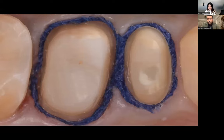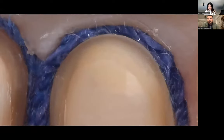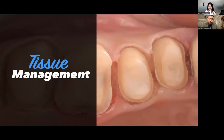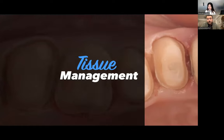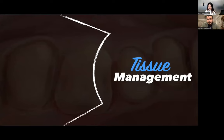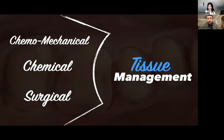For me, tissue management has three main methods and I can customize each method for every single scenario. I can use either a chemo-mechanical method like retraction cord, a chemical-based method, or a surgical method like laser or electrosurgery. According to these three approaches, I can determine the ideal gingival retraction method based on biotype — thick or thin — sulcus depth — deep or shallow — and tissue health — healthy or unhealthy.